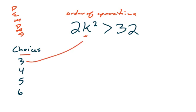First thing we would try is to put in the 3. So that tells us 2 times 3 squared is greater than 32. Well, let's see if that's true. This becomes a 9. So 2 times 9 is that greater than 32. 2 times 9 is 18, and 18 is not greater than 32. So we know that 3 can be ruled out as an option because it doesn't work.